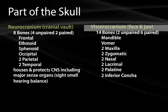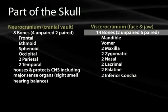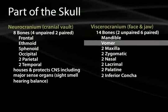The viscerocranium makes up the face and the jaw, and it has 14 bones. Two of them are unpaired and the rest are paired. The mandible and vomer, which runs through the midface, are not paired. All of the others are paired.